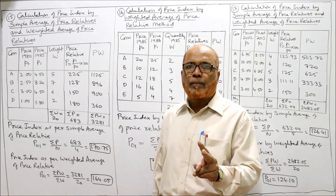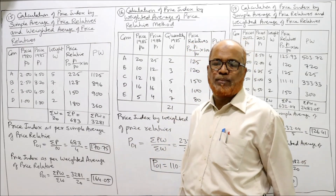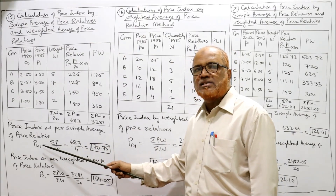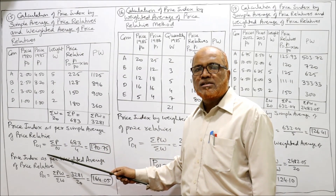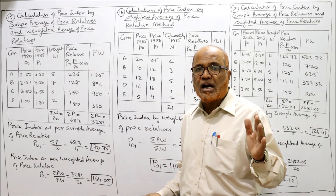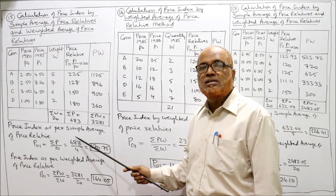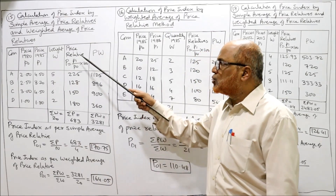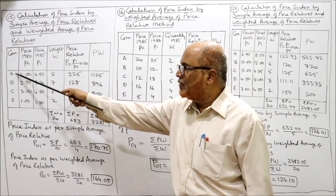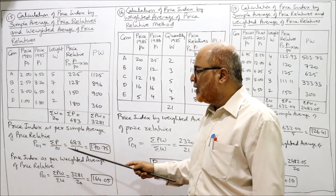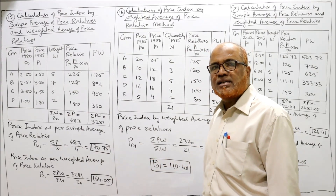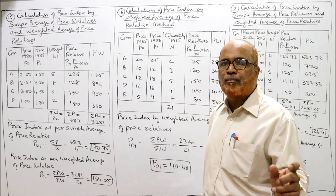Now we apply two methods: simple average and weighted average. First, simple average: price index by simple average of price relatives. The formula is summation P divided by N. N is the number of items — here we have 4 items: A, B, C, D. So summation P by N = 683 divided by 4 = 170.75. This is the price index according to simple average of price relatives.